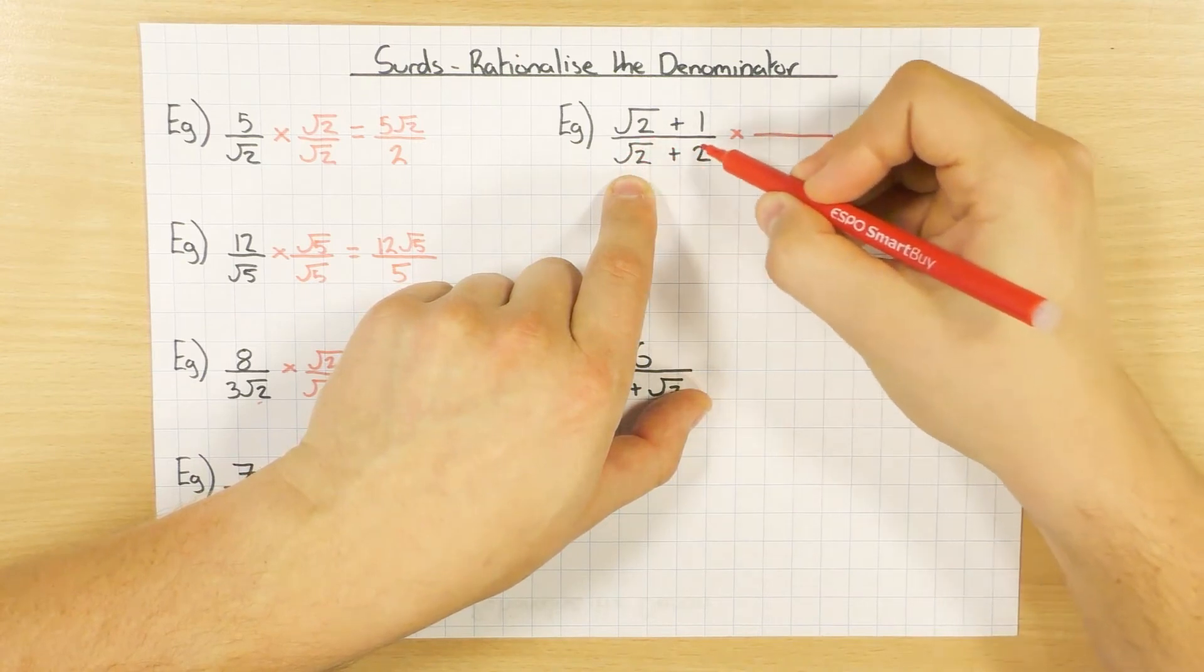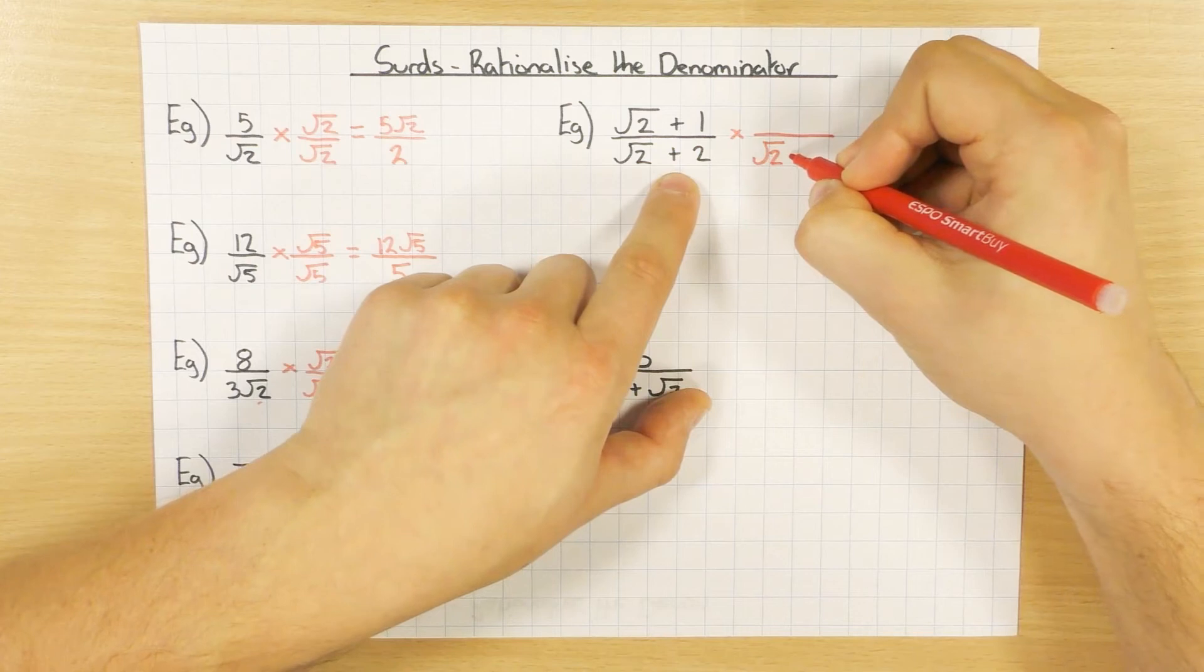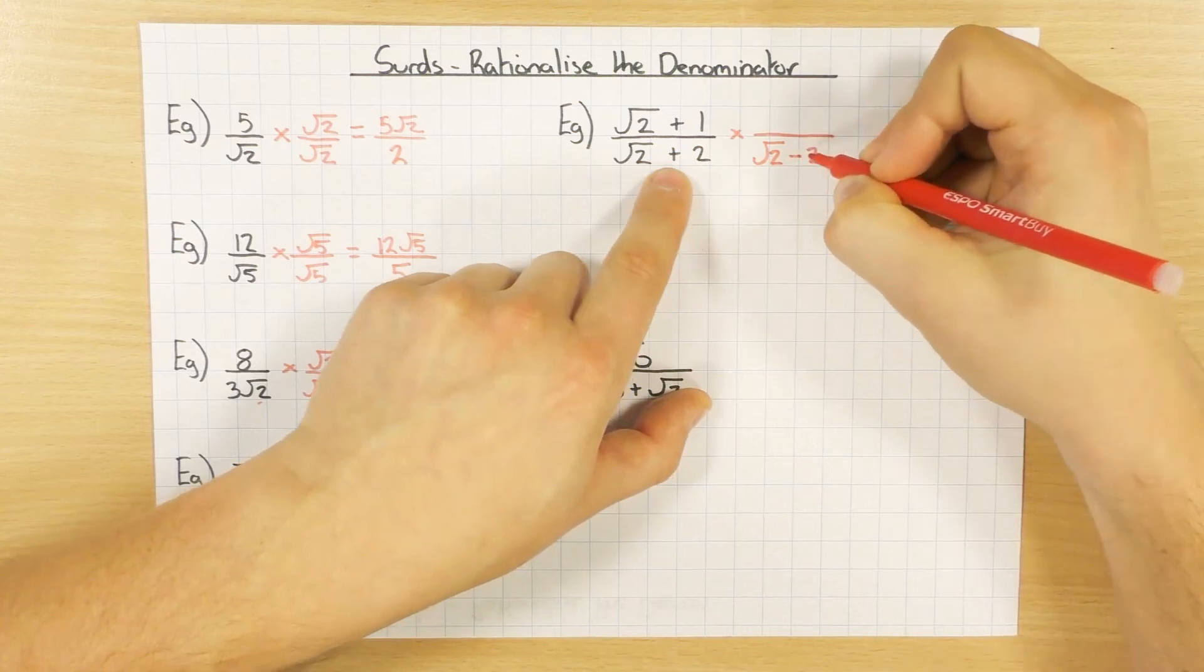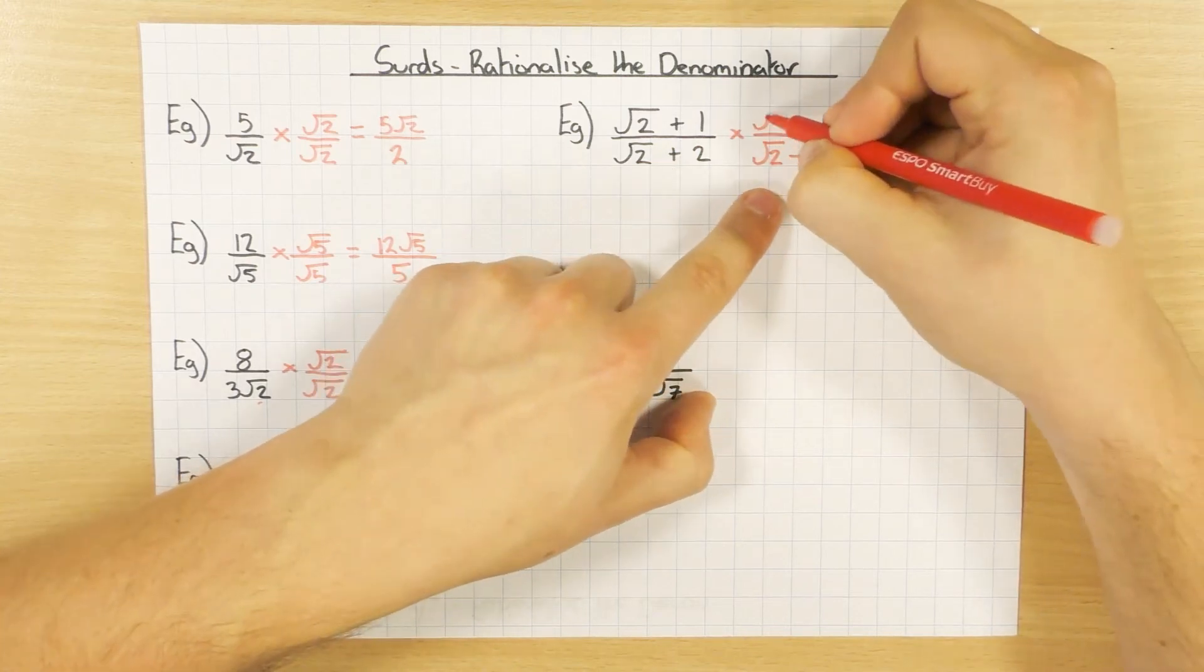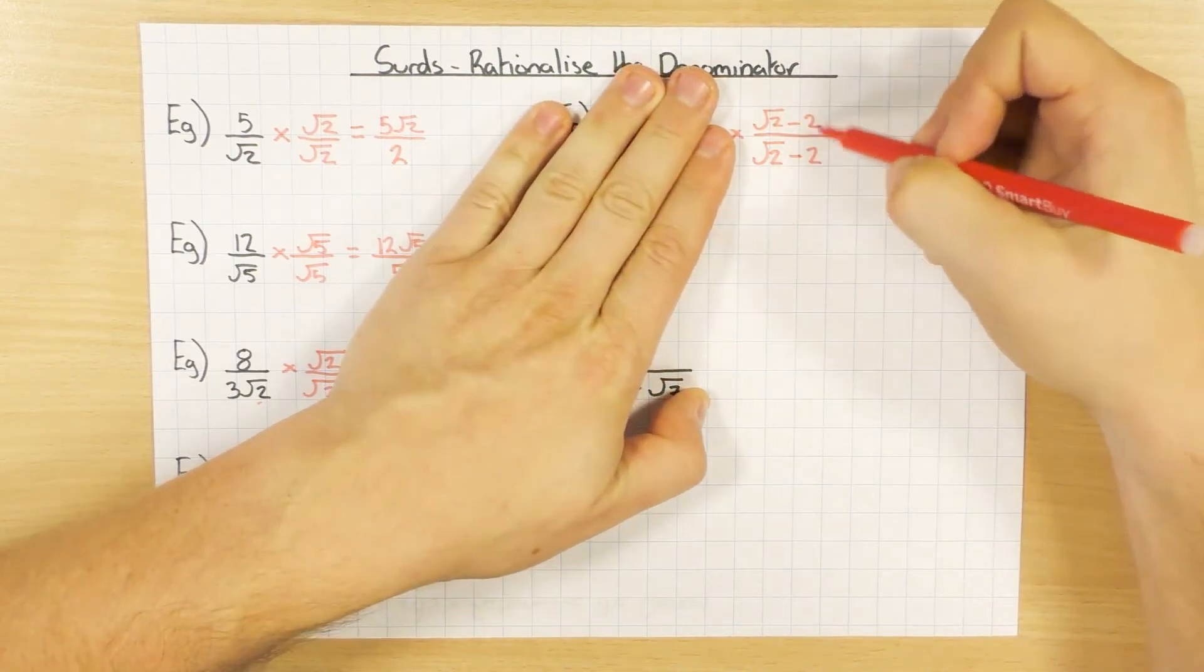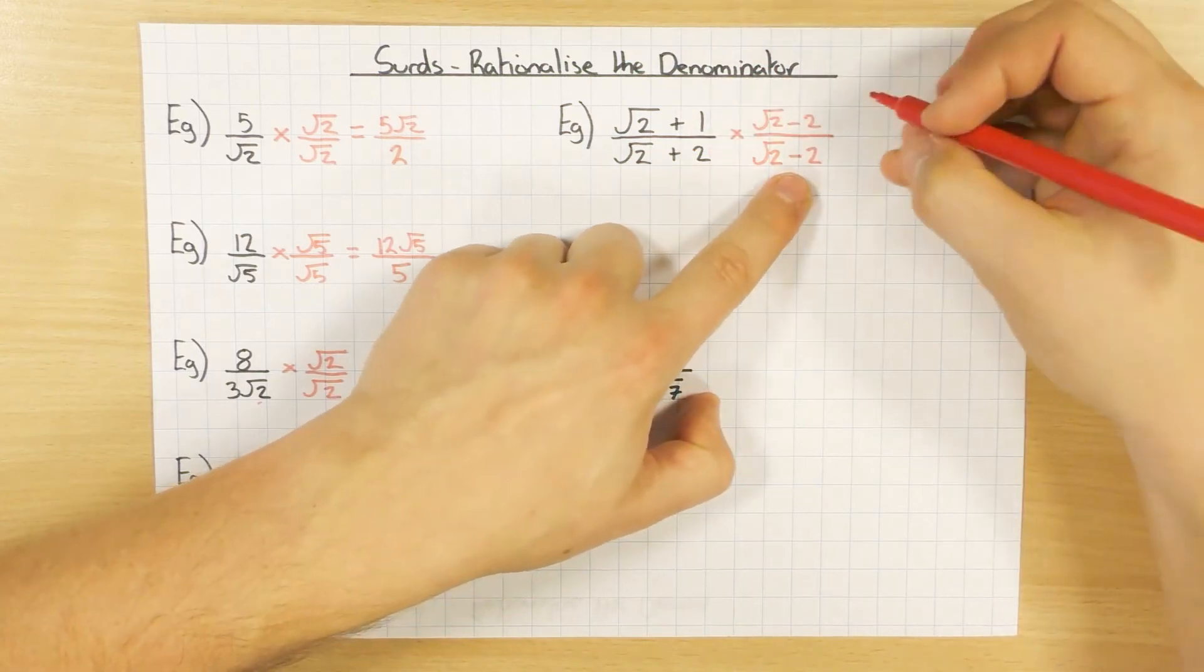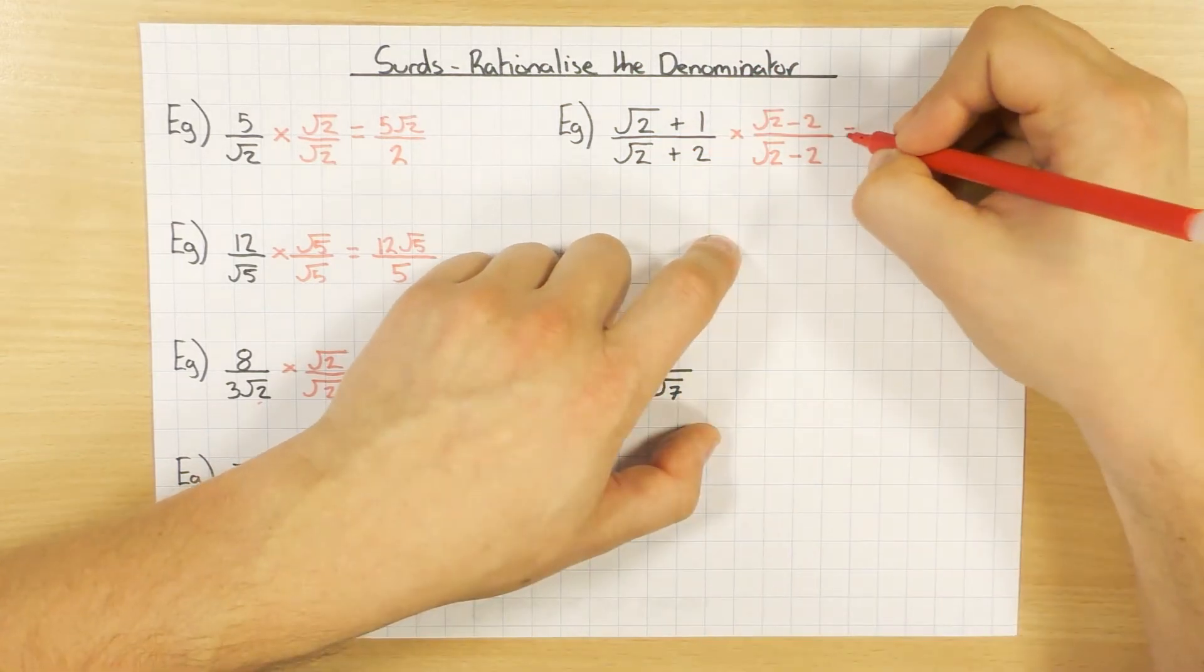If I've got root 2 plus 2, what I'm going to do is I'm going to times both top and bottom by root 2 minus 2. So I'm going to change that plus to a minus. And of course, I'm going to do exactly the same to the top. So I'm still timesing by 1 essentially, but because that's a plus and that's a minus, you'll see what happens in a minute.